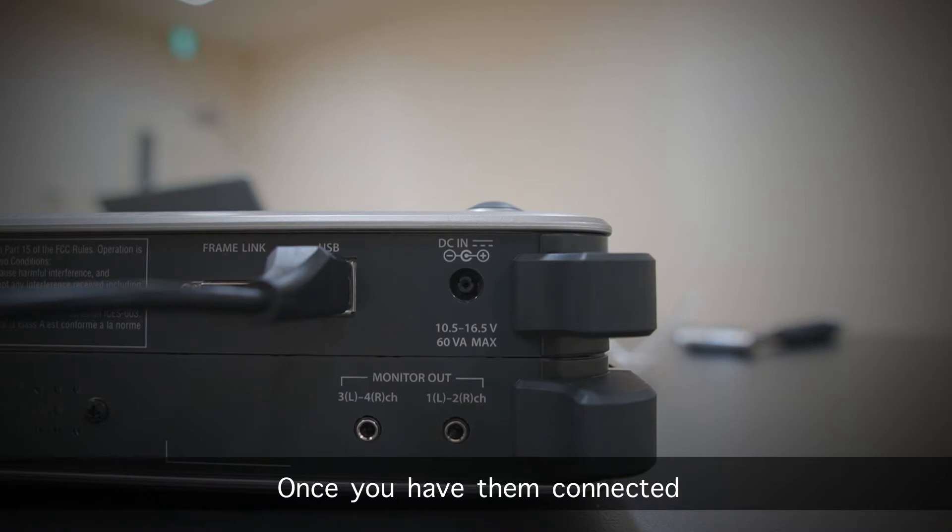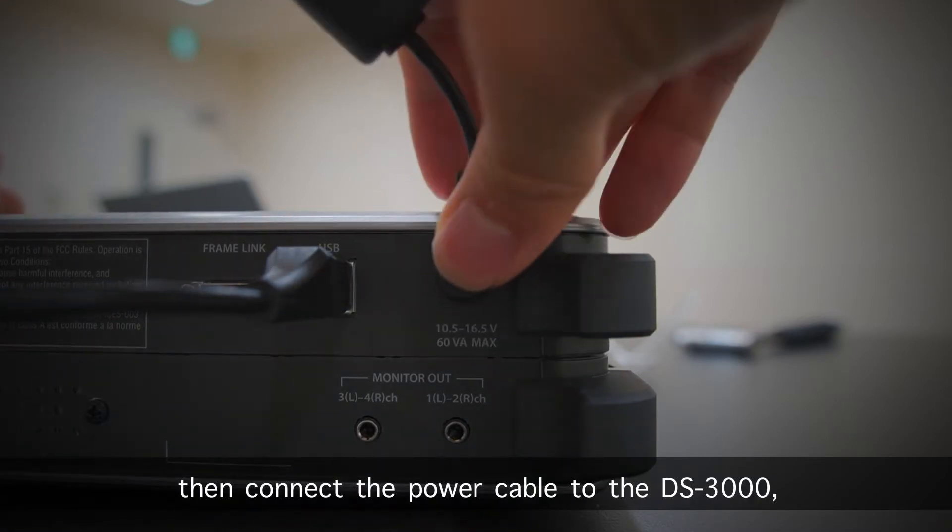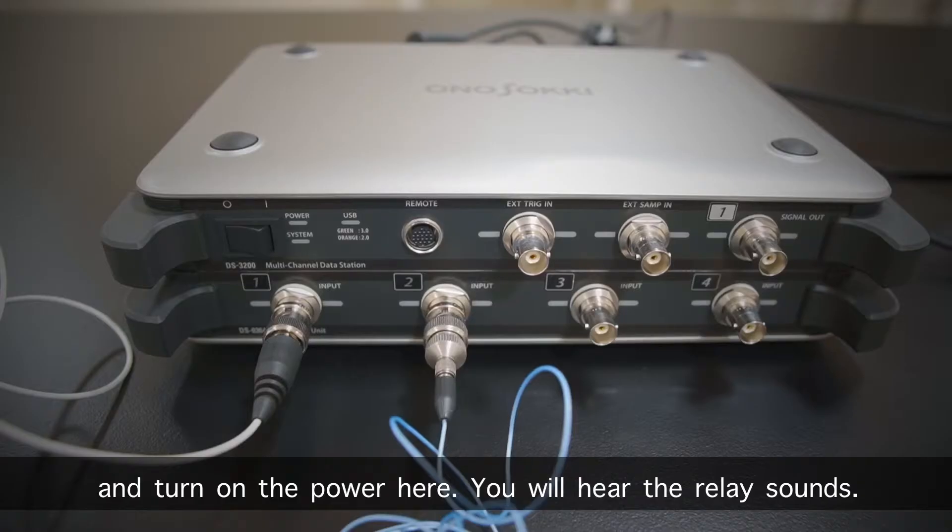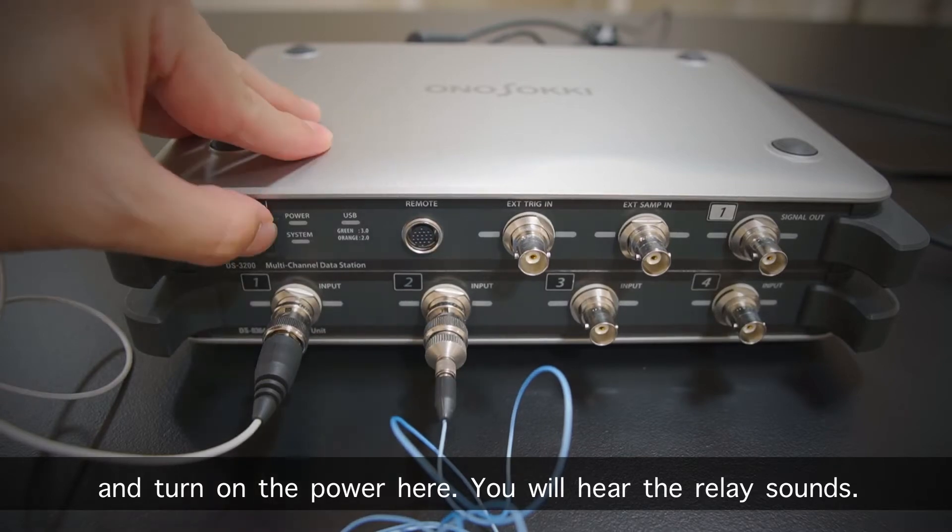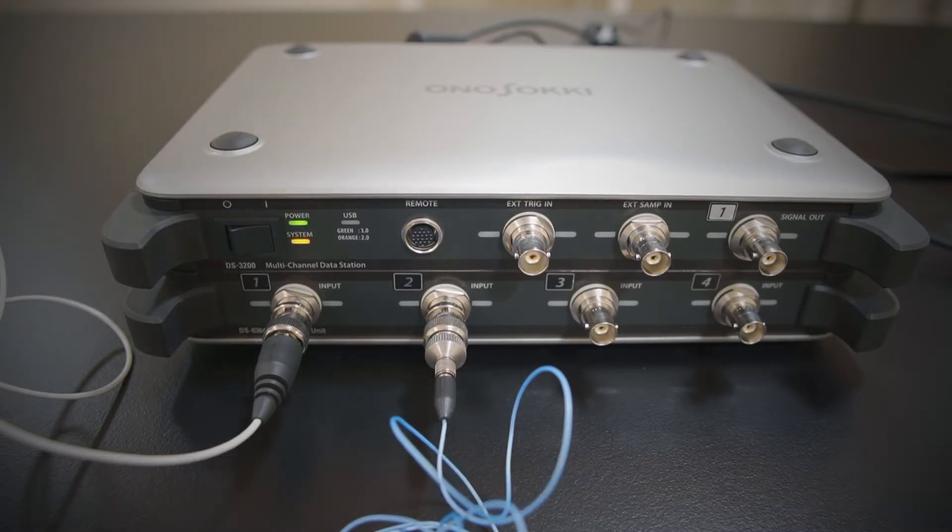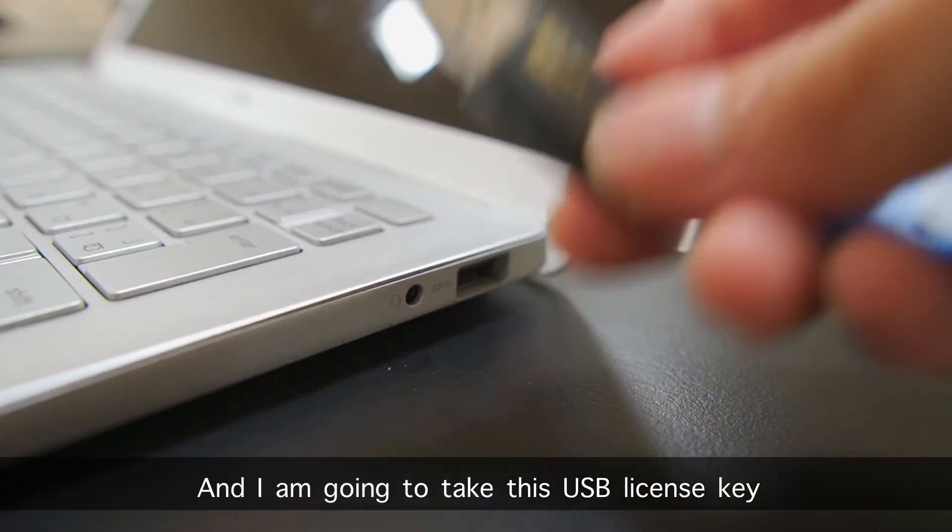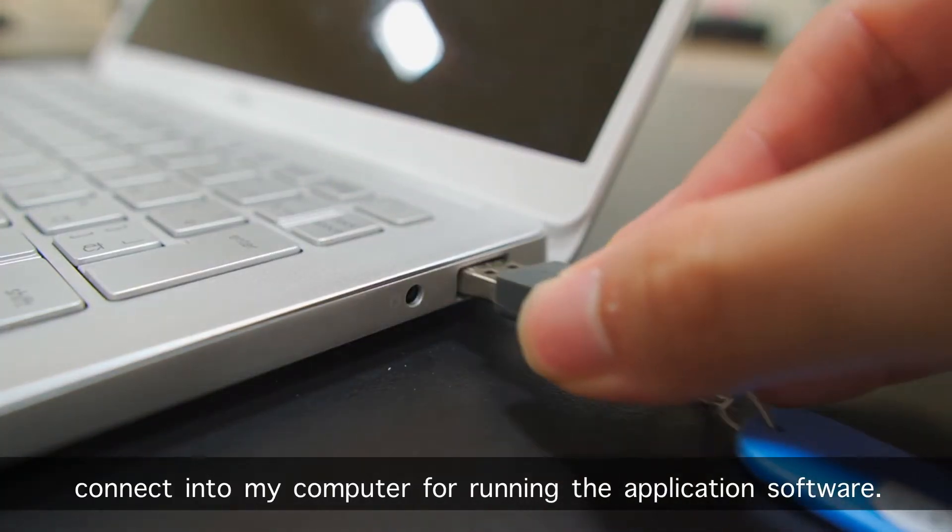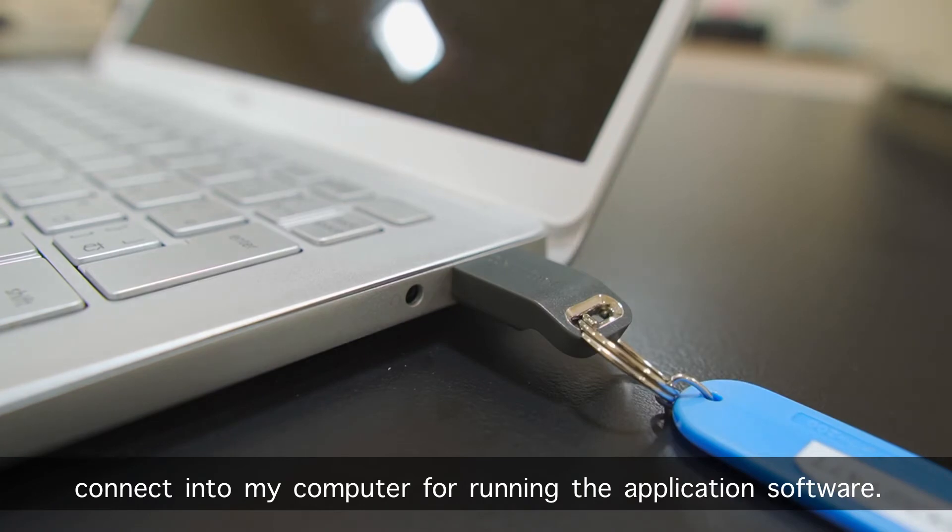Once you have them connected, then connect the power cable to the DS-3000 and turn on the power here. You will hear the relay sound. And I'm going to take this USB license key, connecting to my computer, running the application software.